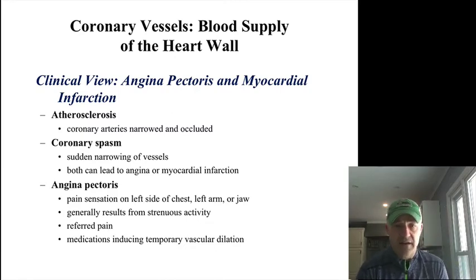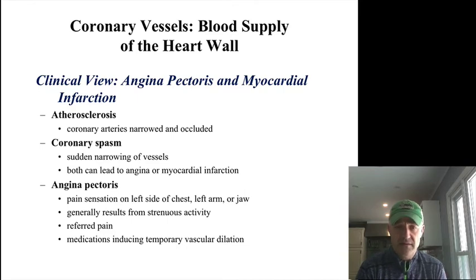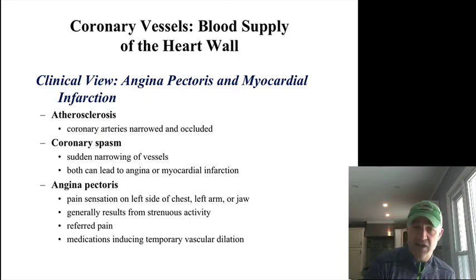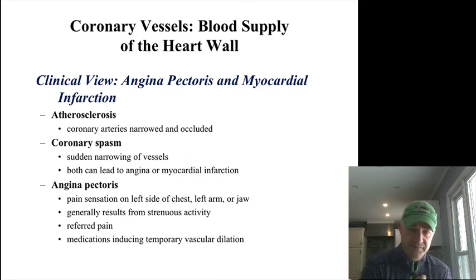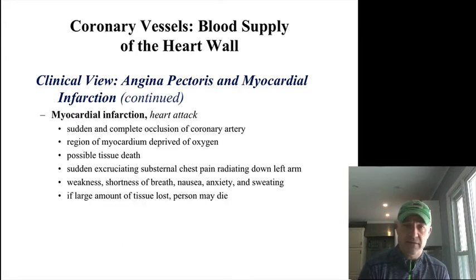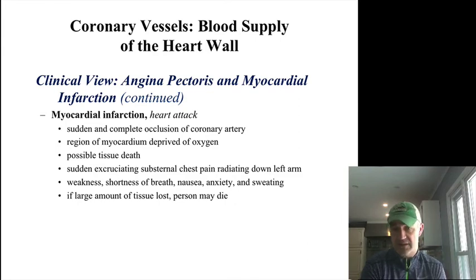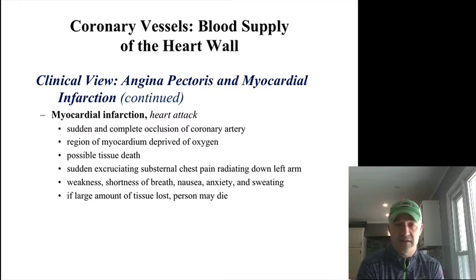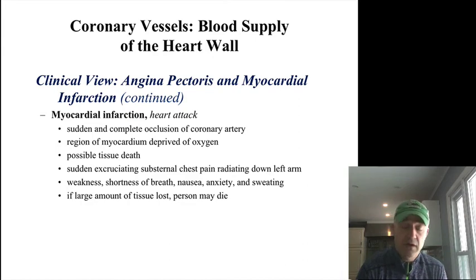Atherosclerosis is the hardening and thickening of the arteries. This can be an issue if there is too much blockage, especially with any narrowing of those vessels, like a coronary spasm. Angina pectoris is chest pain — if your heart is having some issues, you feel chest pain, which is really a referred pain, usually from strenuous activity. A myocardial infarction is a type of heart attack where there is some blockage in the coronary arteries, the tissue that is deprived of blood flow undergoes damage and death, and if it is too much, it can be deadly.